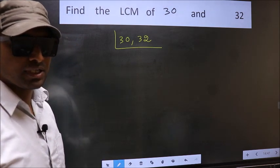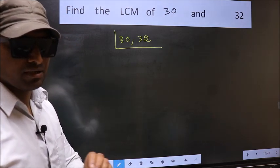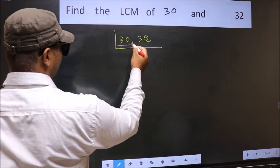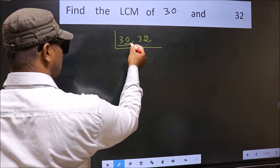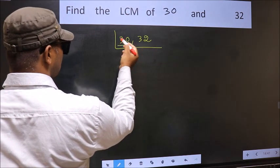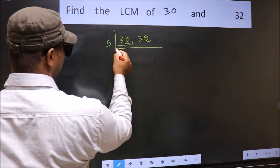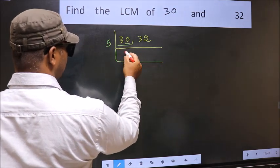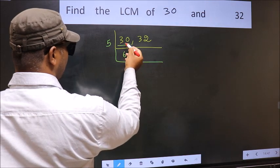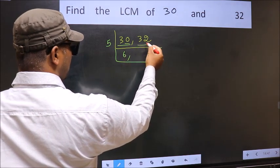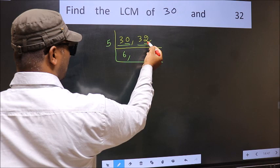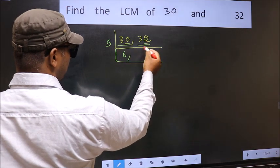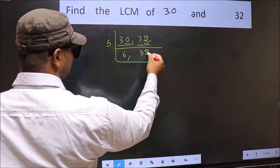Now focus on the first number, which is 30. The last digit is 0, so directly take 5. We get 30 in the 5 table at 5 times 6 equals 30. The other number is 32 — the last digit is neither 0 nor 5, so it is not divisible by 5. So we write it down as it is.